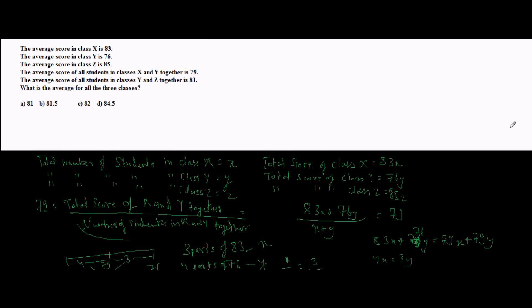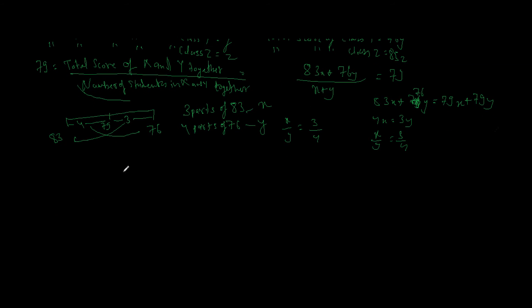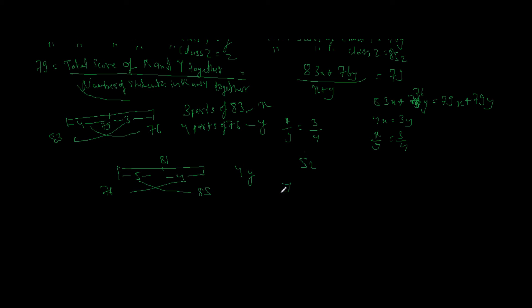The same technique applies for Y and Z, where Y is 76, Z is 85, and Y and Z together give 81. One end is 76, the other is 85, and the target is 81. Distance is 5 on the left and 4 on the right. Doing a cross: 4 parts of Y and 5 parts of Z, so y/z = 4/5.